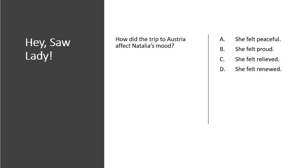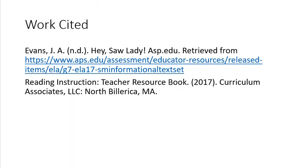How did the trip to Austria affect Natalia's mood? A, she felt peaceful; B, she felt proud; C, she felt relieved; or D, she felt renewed? If you selected D, you are correct. She felt renewed, rejuvenated. She was excited that she discovered the saw and that it could make music. This concludes our lesson today.